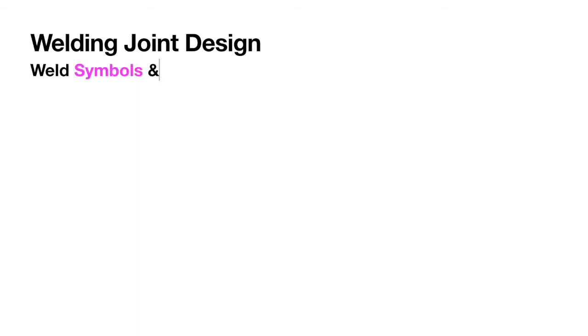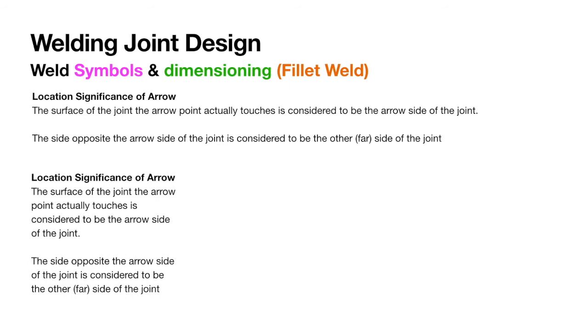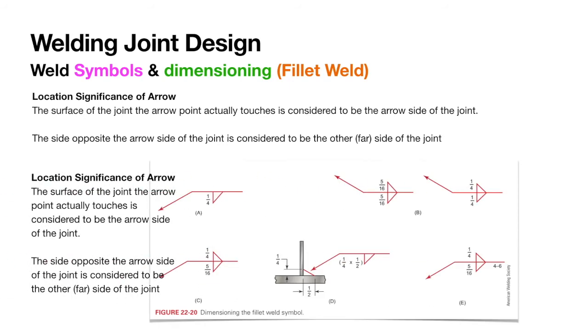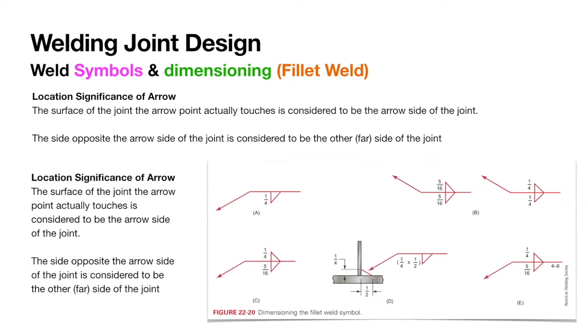Fillet welds can either be on one side or both sides and can have either equal legs or unequal legs. For single fillet welding on one side, it can be shown in Figure 22.20a. Dimensional fillet welds are shown on the same side of the reference line as the weld symbol and are shown to the left of the symbol. When both sides of the joint have the same fillet welds, they are dimensioned as shown in Figure 22.20b.